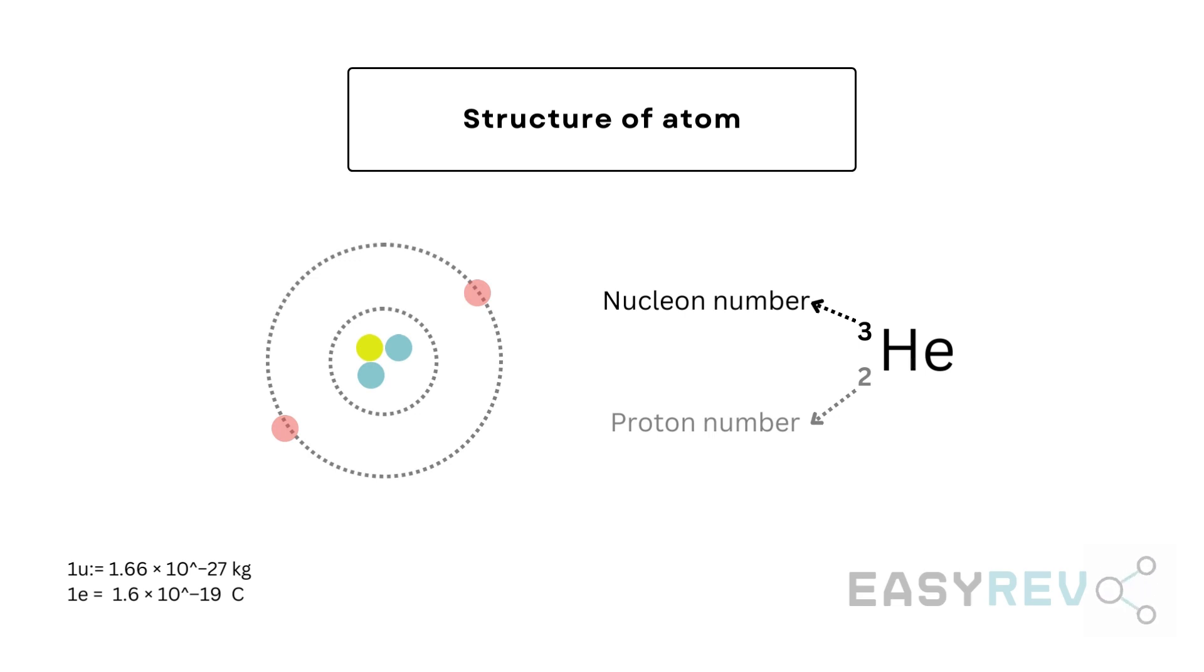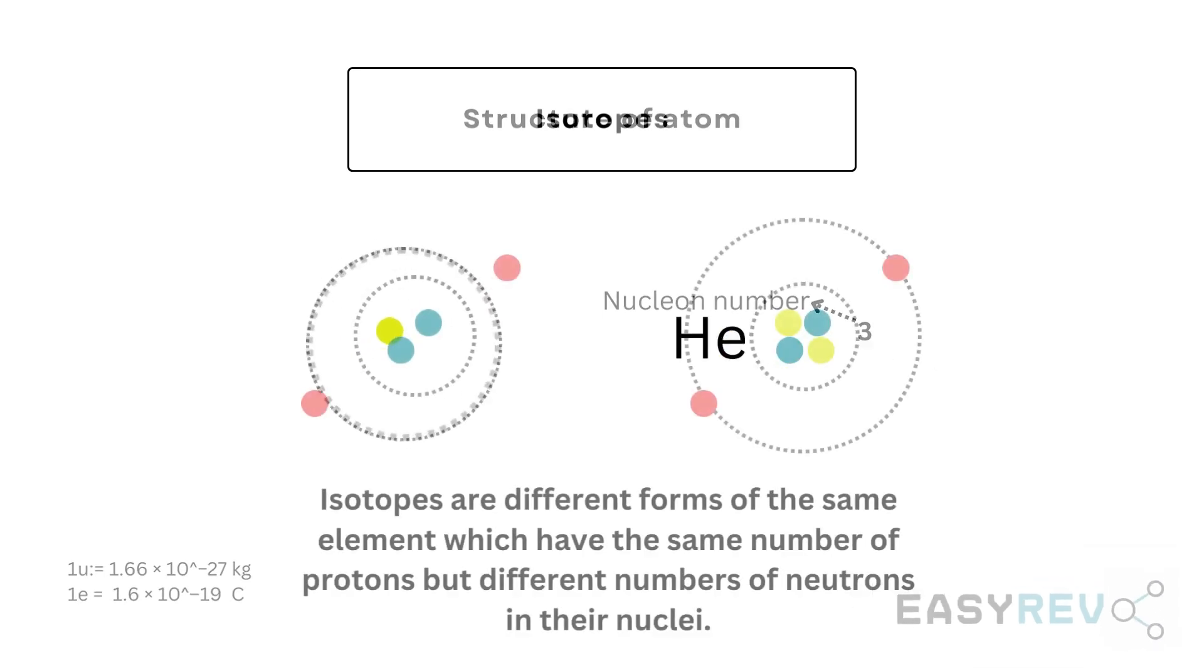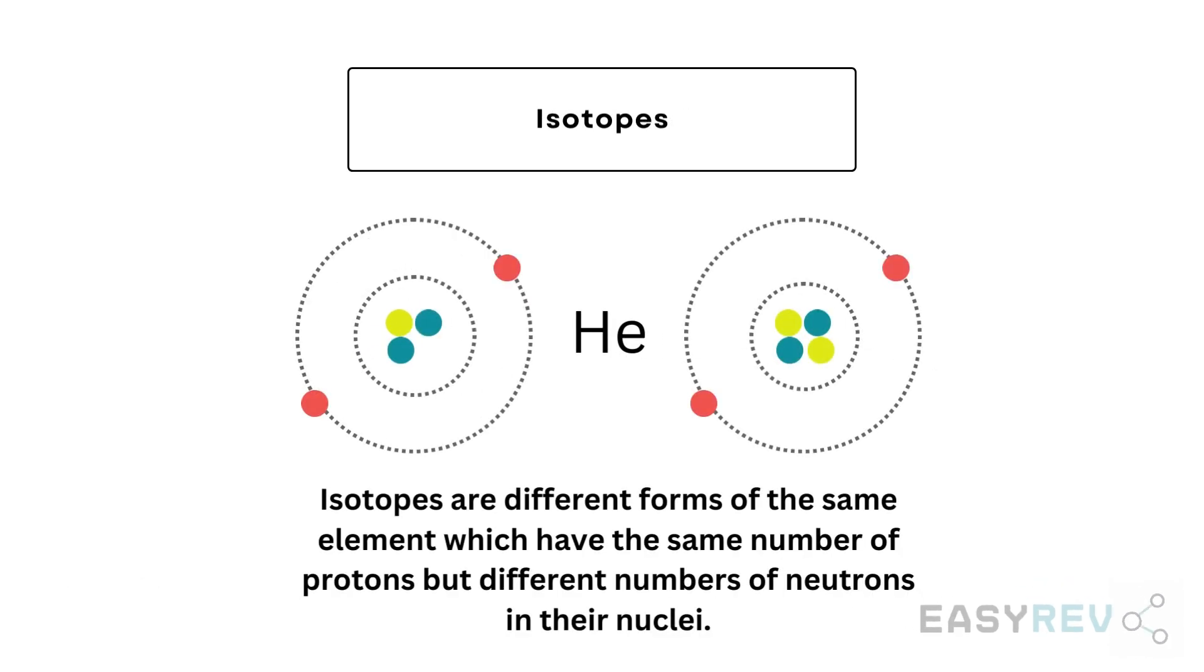What we've encountered here is the notion of isotopes. Isotopes are different forms of the same element which have the same number of protons but different number of neutrons in their nucleus.